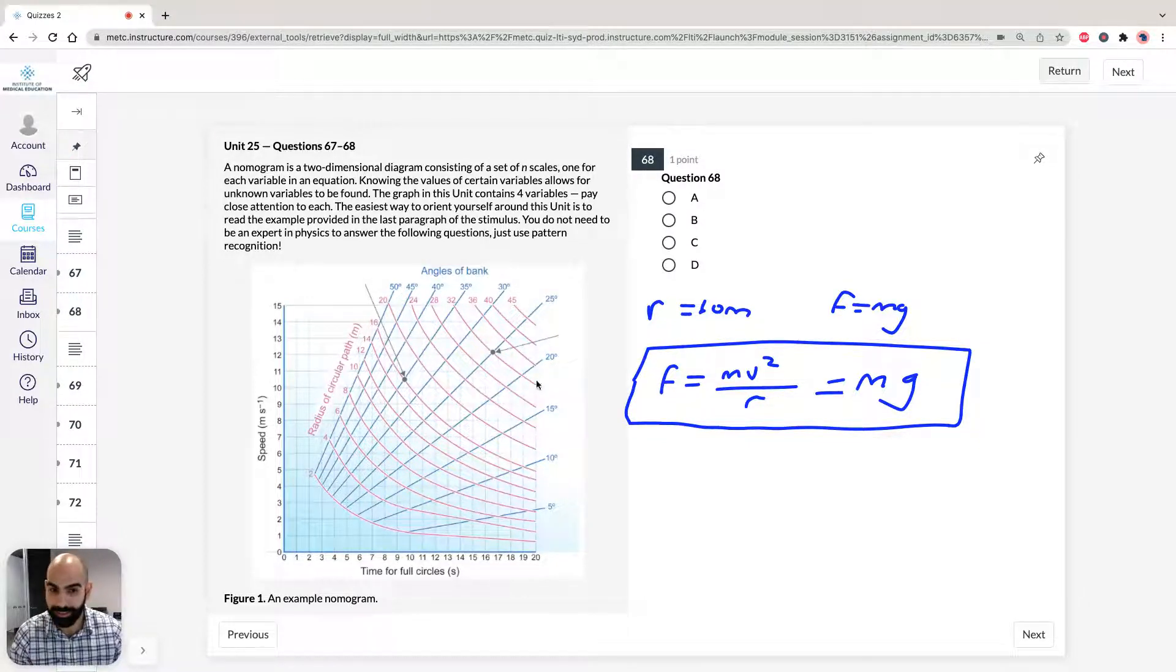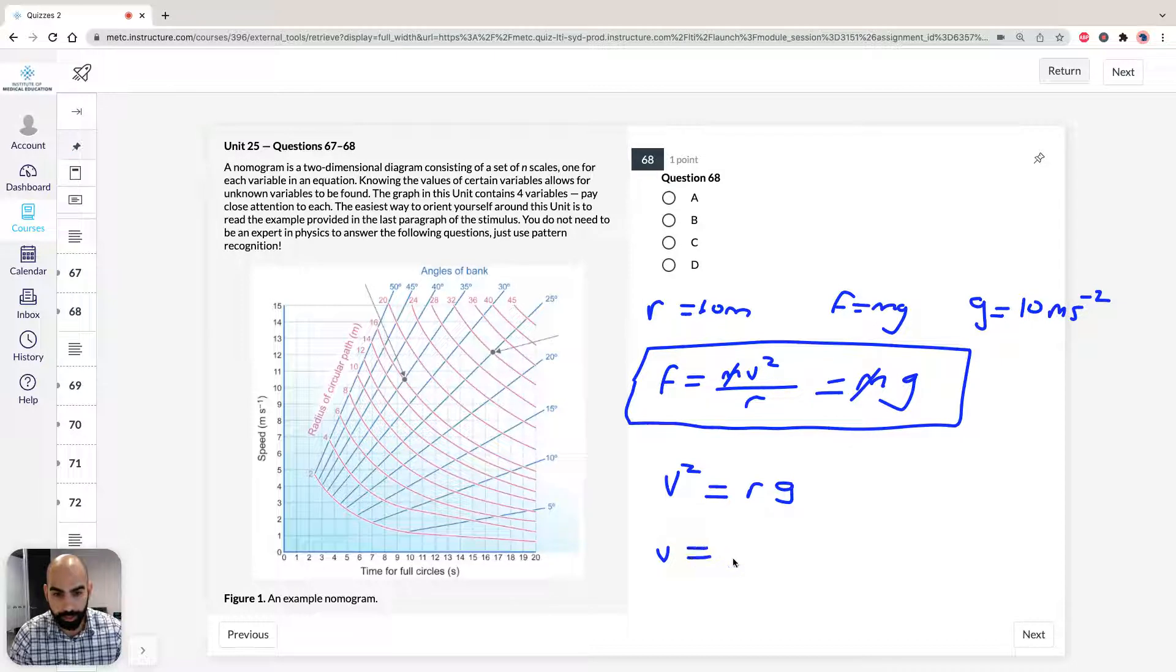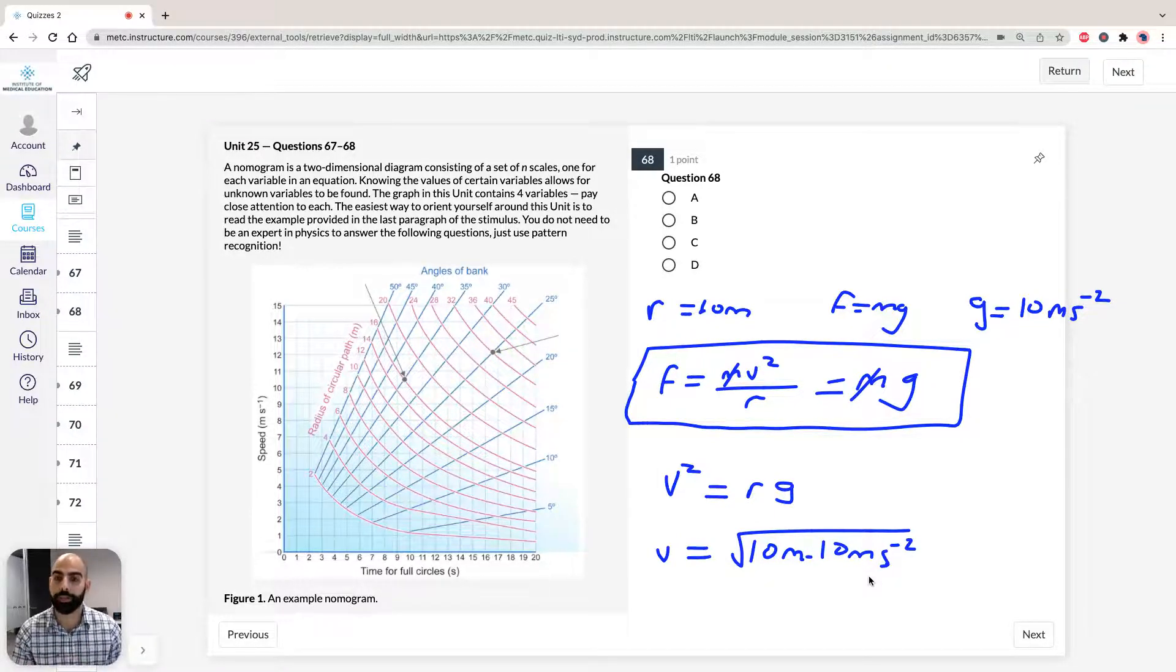So as I said before, we don't need the mass because we can just cross them out from the equation just like that. So then we can move the r across here and we're going to be left with velocity is going to equal radius of circular path times gravity. Now it's interesting to note that ACER hasn't given us the value for gravity, but we can always just assume it's going to be, unless they tell us otherwise, the gravity on the surface of the earth can always be assumed as 10 meters per second squared. So we can rewrite this as velocity squared equals rg. So our velocity is going to equal square root 10 meters times 10 meters per second squared.